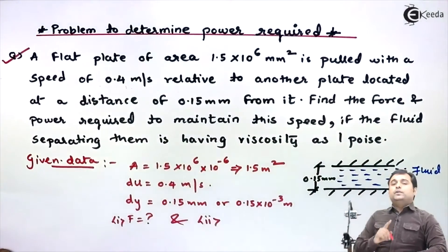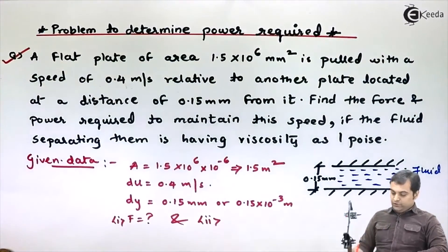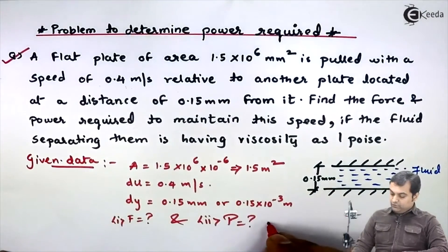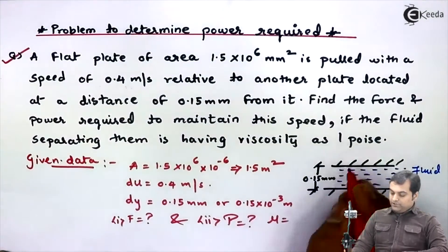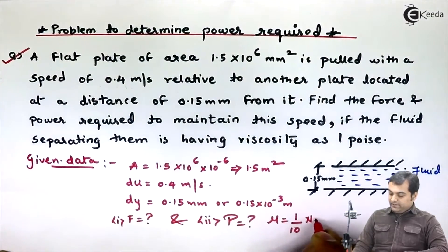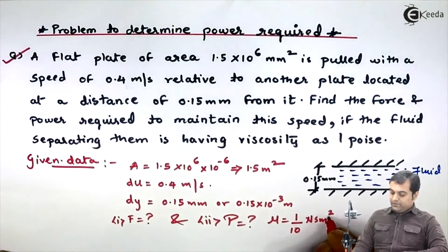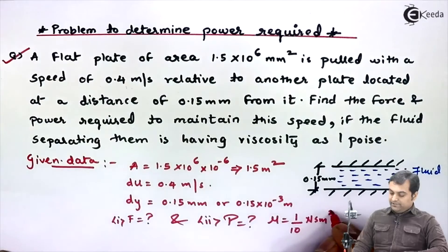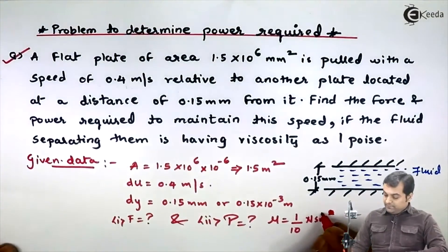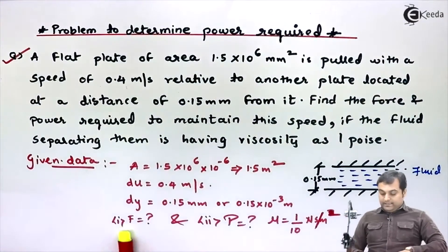Viscosity is given as one poise. Poise is the unit of dynamic viscosity, so mu = 1 poise. One poise equals 1/10 N·s/m². Therefore mu = 0.1 N·s/m².